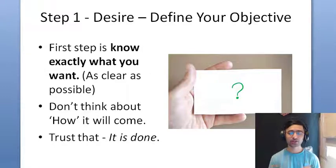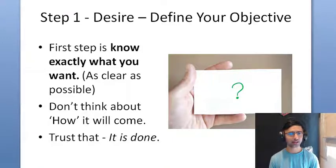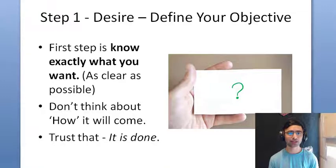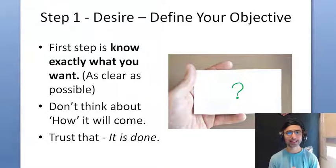Don't think about the how. This was the biggest hang-up when I got into manifesting. I wanted an extra $1,000 and always assumed it would come from my job. These kinds of hang-ups can actually slow down your manifestation. Don't think about the how — just imagine it, drop it, and trust that it is done.